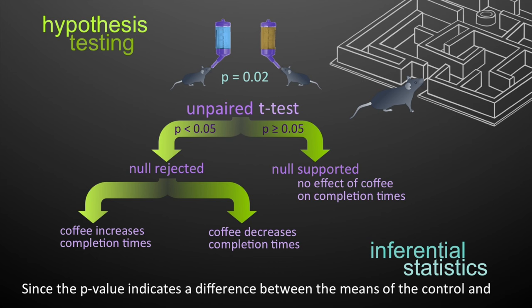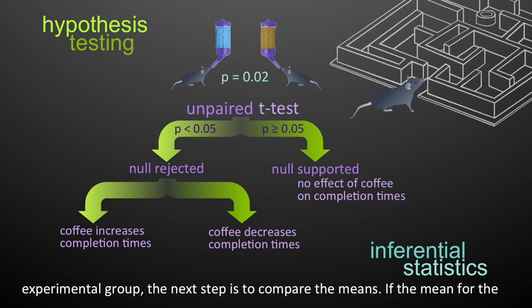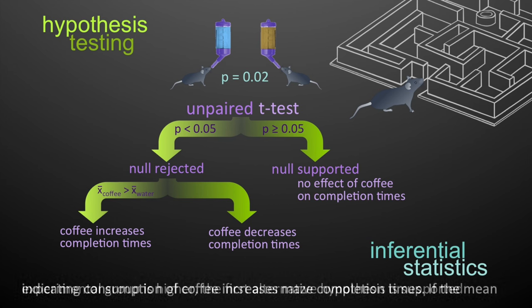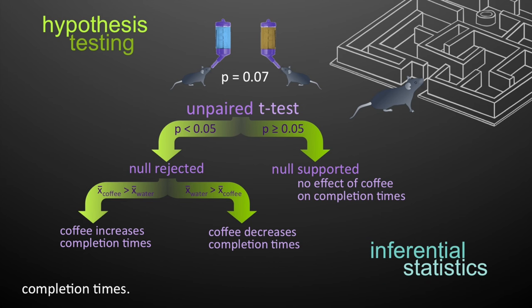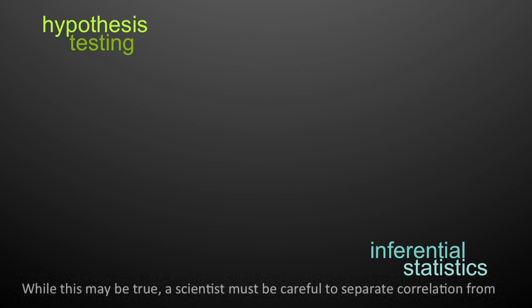Since the p-value indicates the difference between the means of the control and experimental group, the next step is to compare the means. If the mean for the experimental group is higher, the first alternative hypothesis is supported, indicating consumption of coffee increases maze completion times. If the mean of the control is higher, the research concludes that coffee actually reduces maze completion times.